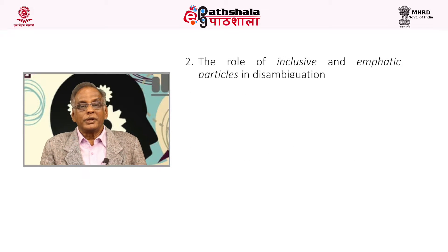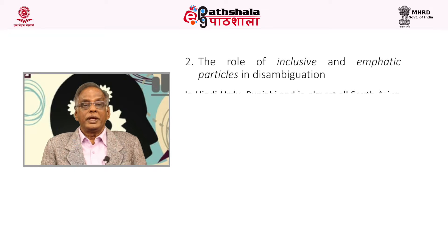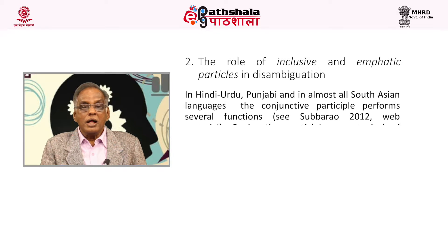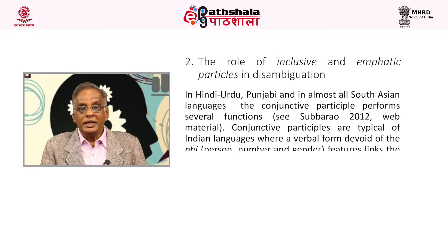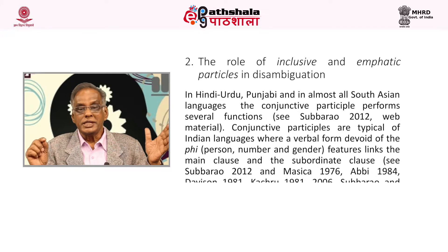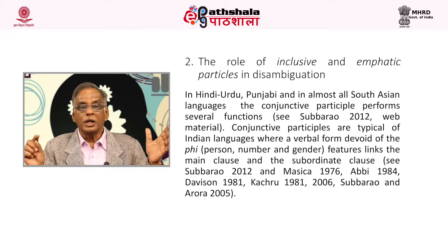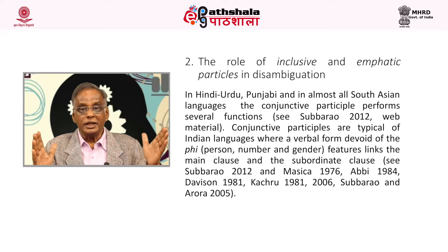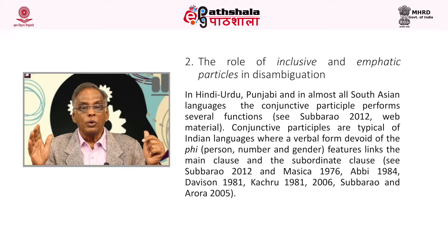Now, we are going to discuss the role of inclusive and emphatic particles in disambiguating a sentence. All South Asian languages have inclusive particles. For example, in Hindi, you have the inclusive particle bhi. Take this example: 'Ram bhi jayega,' which means 'Ram also would go along with some other people.' Or you can have the emphatic particle hi: 'Ram hi jayega,' where hi is an emphatic particle which has Ram in its scope — the subject — meaning 'Ram alone would go.'